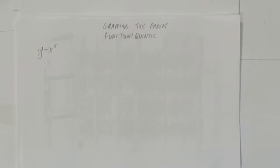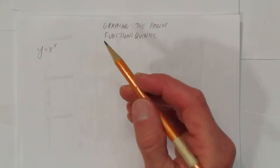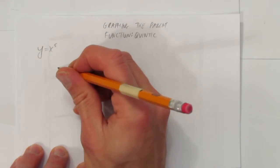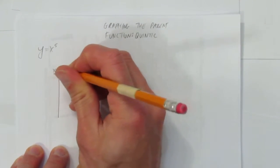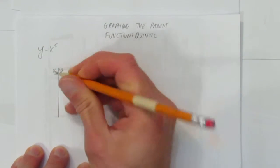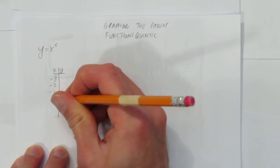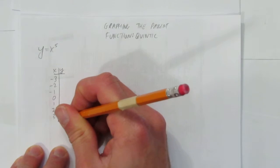In this video, we'll look at graphing the parent function. The particular parent function I want to look at is a quintic, or y equals x to the power of 5. We'll start by making a table of values and picking small, easy-to-solve integers. I'll go from negative 3 to positive 3.